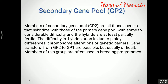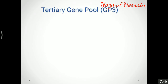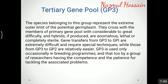Members of the secondary gene pool are all those species that hybridize with those of the primary gene pool with some to considerable difficulty, and the hybrids are at least partially fertile. This difficulty in hybridization is due to ploidy differences, chromosomal alterations, or genetic barriers. Gene transfers from gene pool 2 to gene pool 1 are possible but usually difficult, and members of this group are often used in breeding programs.